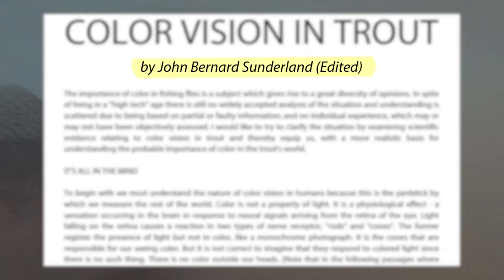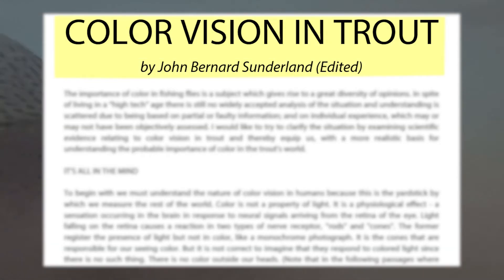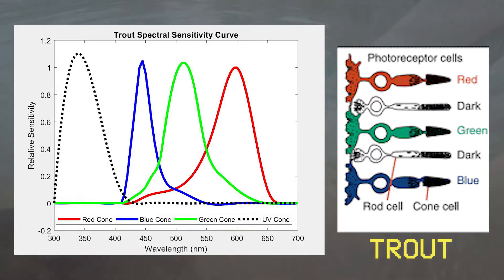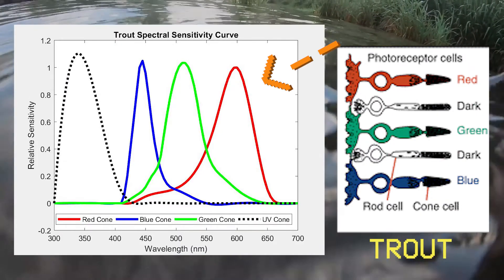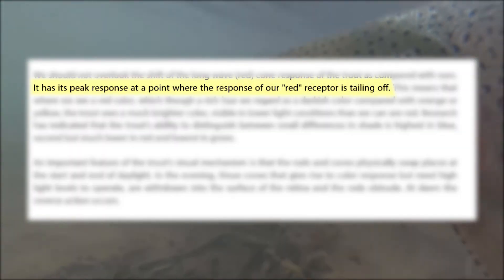In an excerpt from popular fly tier John Bernard Sunderland's color vision in trout, he recognizes that a trout's optical sensitivity is different than that of a human with regards to the red cone, having a peak response point where a human red cone begins tailing off.